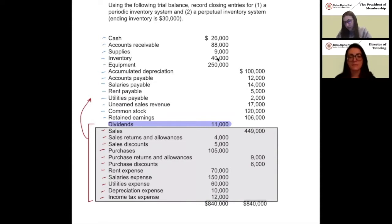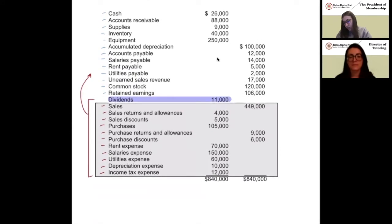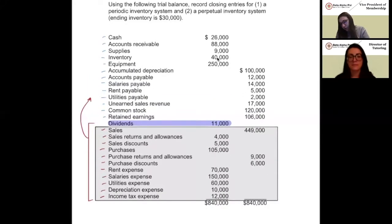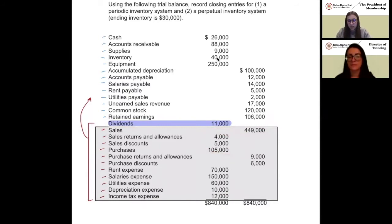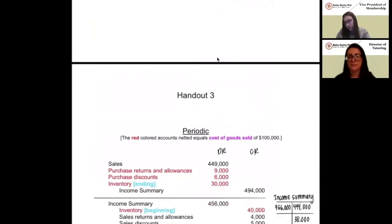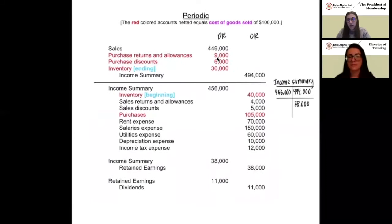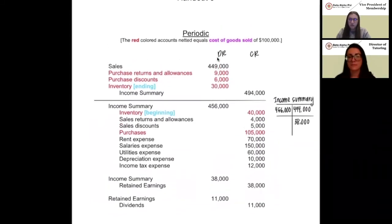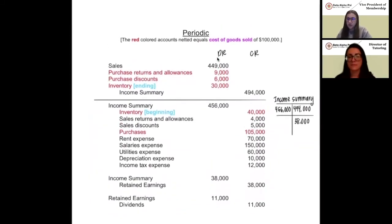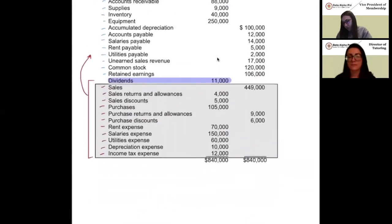To close these accounts out: if they have a credit balance, we need to debit them to close them out, and if they have a debit balance, we need to credit them to close them out. All of them will go into the income summary, and then we'll put that into retained earnings. From retained earnings, we pay out our dividends.